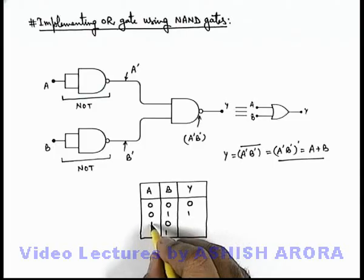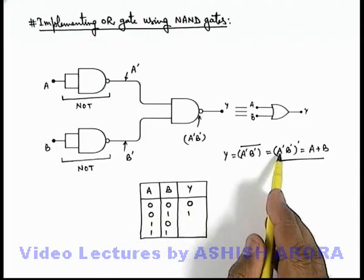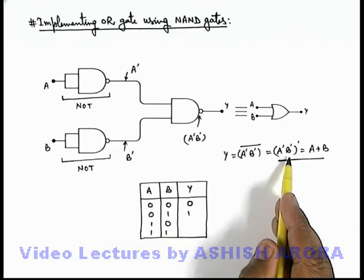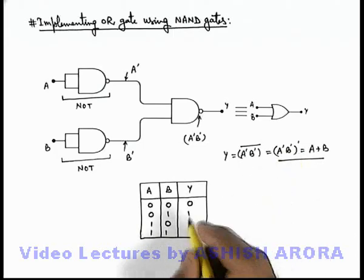Similar to that, when A is 1 and B is 0, A prime will be 0 and B prime will be 1. And the AND operation of 0 and 1 is 0, of which the prime is 1.